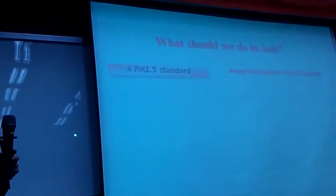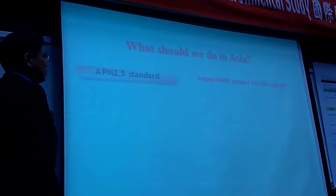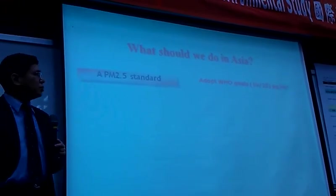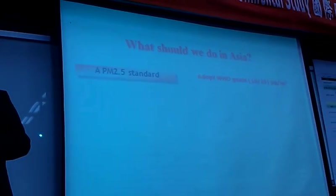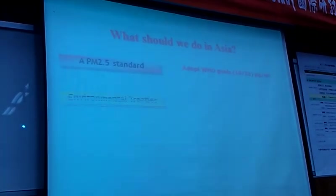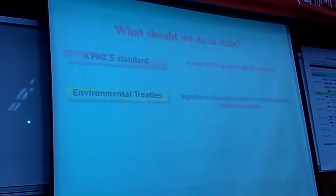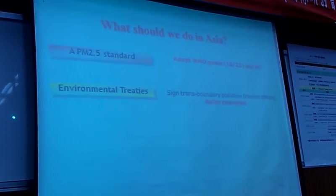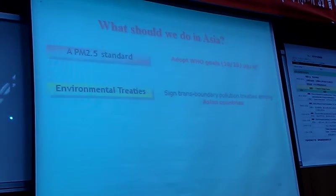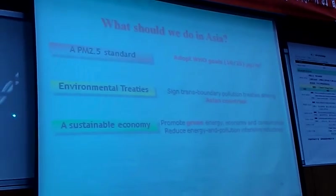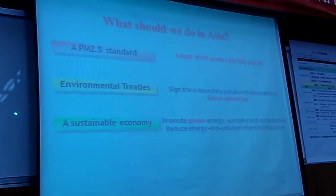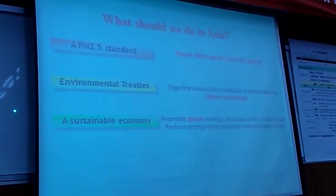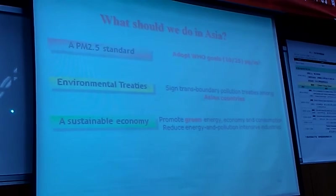Beijing smog told us a lot. So what can we do? I promote a PM2.5 standard using WHO goals — annual average 10, daily average 25. Then we have to start environmental treaties among Asian countries, especially transboundary pollution treaties. We have to promote a sustainable economy, promote green energy economy and consumption, and reduce energy and pollution-intensive industries everywhere, not just in Taiwan.